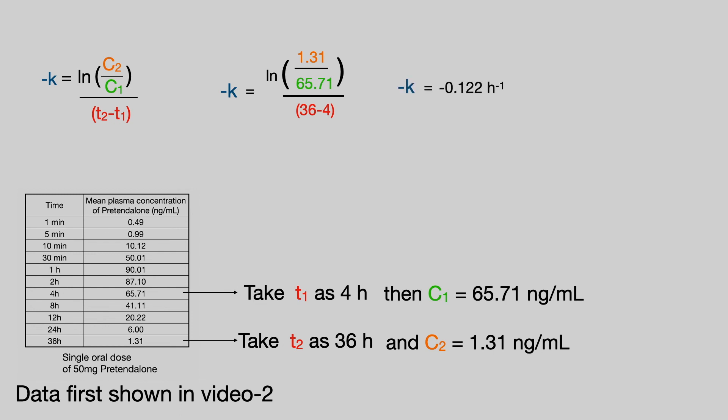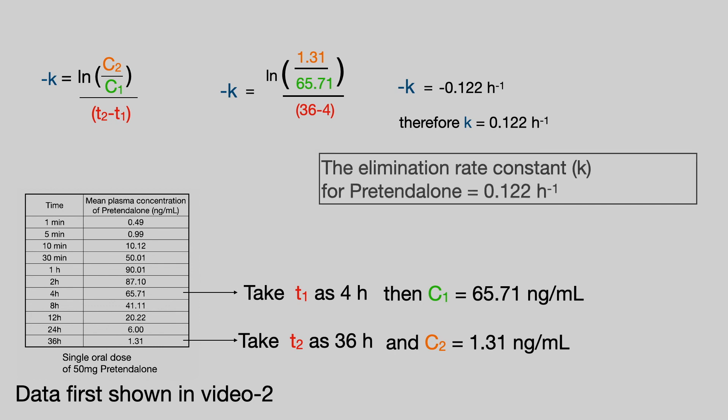So if we calculate that we get minus K equals minus 0.122 per hour. Since there are minus signs on both sides of that equation, K equals 0.122 per hour. The elimination rate constant K for pretendalone is 0.122 per hour.